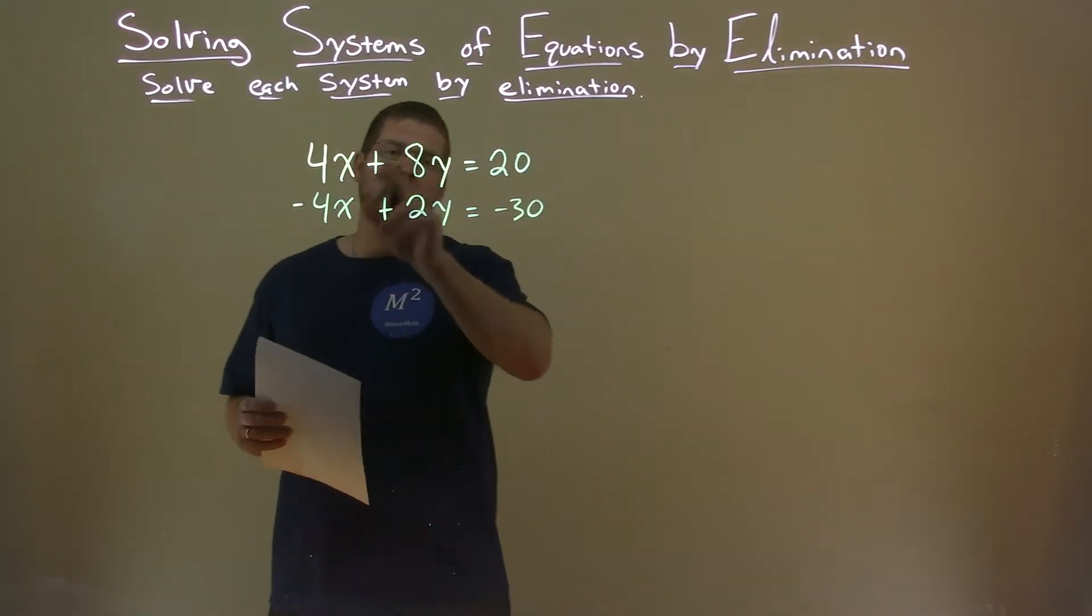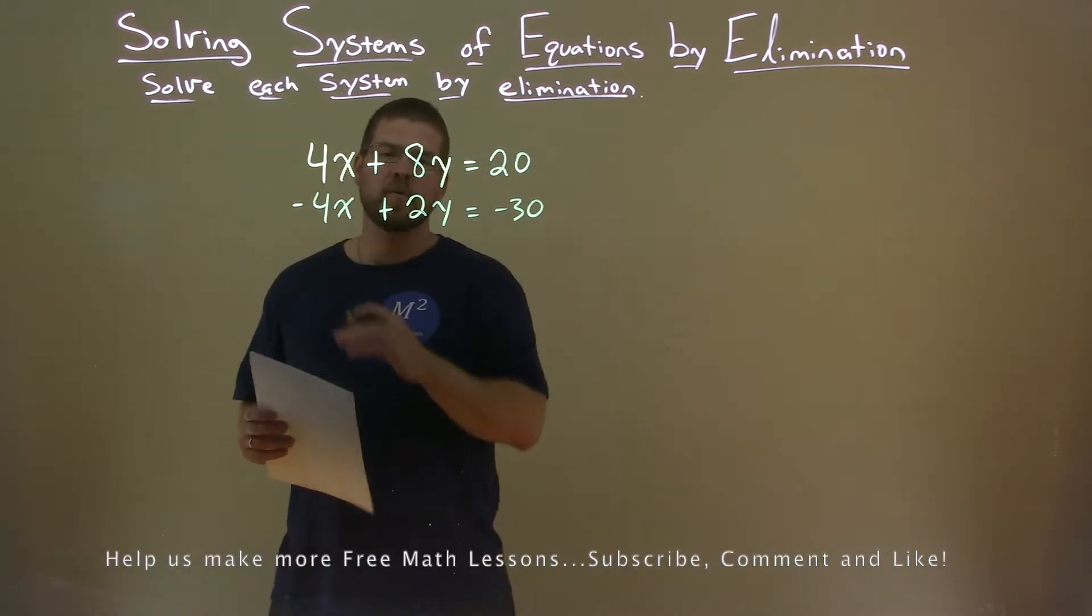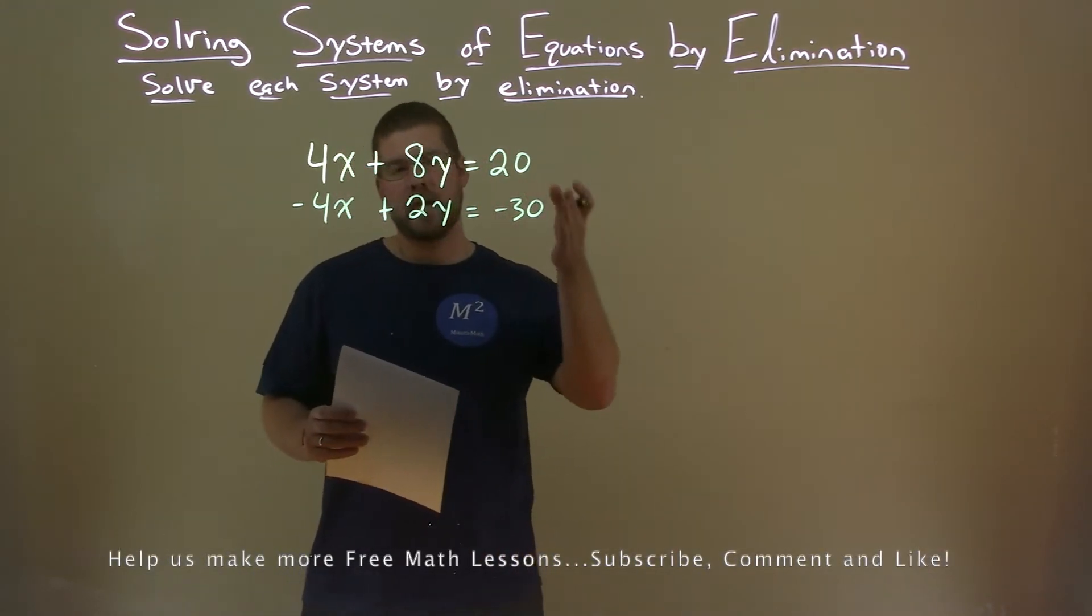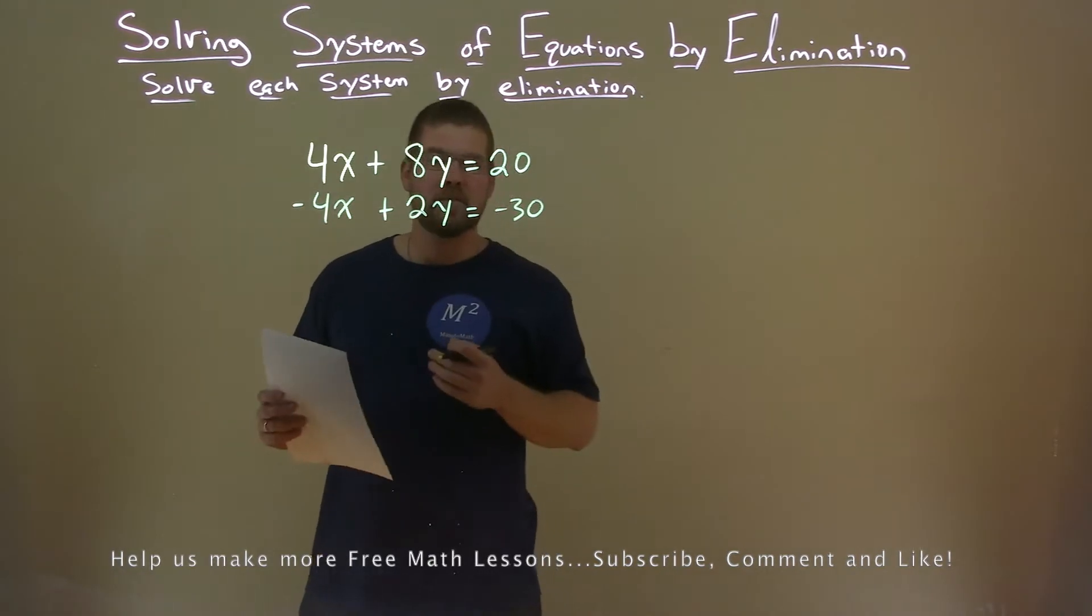So we're given 4x plus 8y equals 20, and negative 4x plus 2y equals negative 30. And we want to solve this system by elimination.